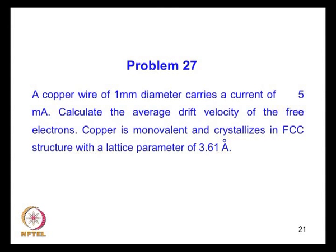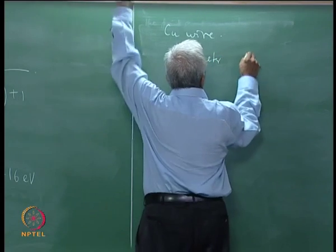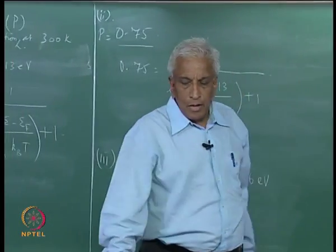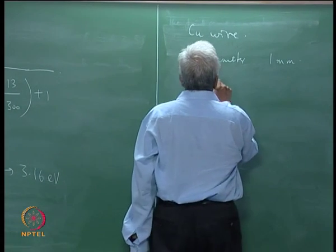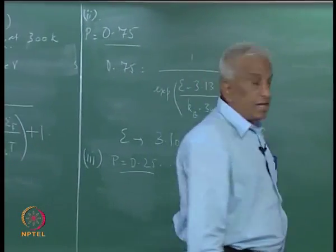Next, we go on to the problem regarding the conduction electrons in copper, in a copper wire. We are told that it has a diameter of 1 mm and it carries a current of 5 milliamps.